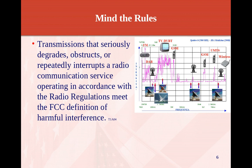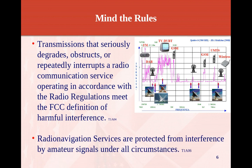As amateur radio operators, we've got to be careful not to interfere with other systems that are out there, primarily radio navigation and radar facilities. Radio navigation services are protected from interference by amateur signals under all circumstances. There are parts of the amateur band very close to or part of radio navigation — that is 160 meters and the 2.4 gigahertz band — and you just have to be mindful not to cause any interference with those systems.